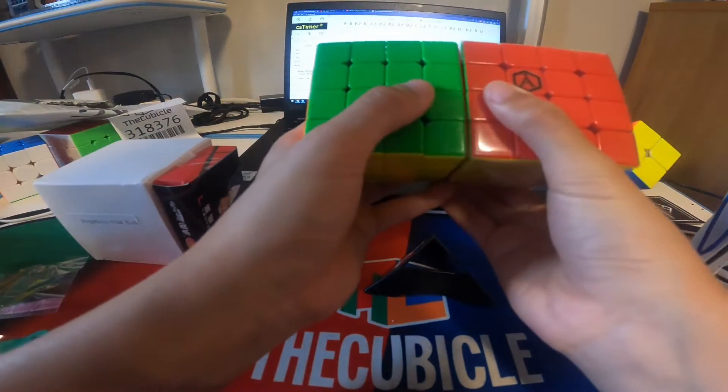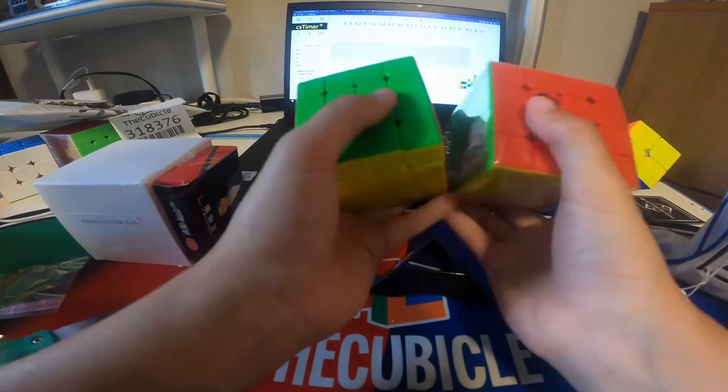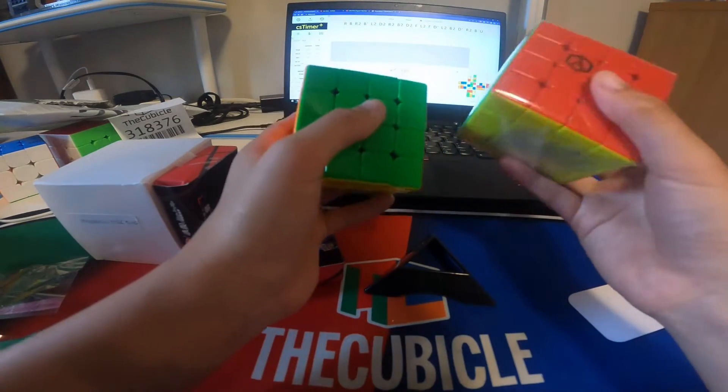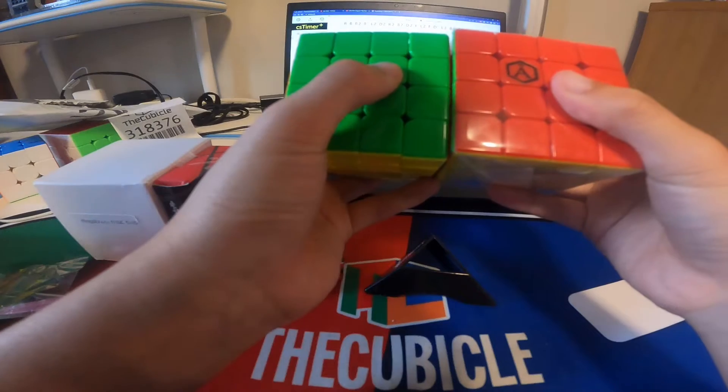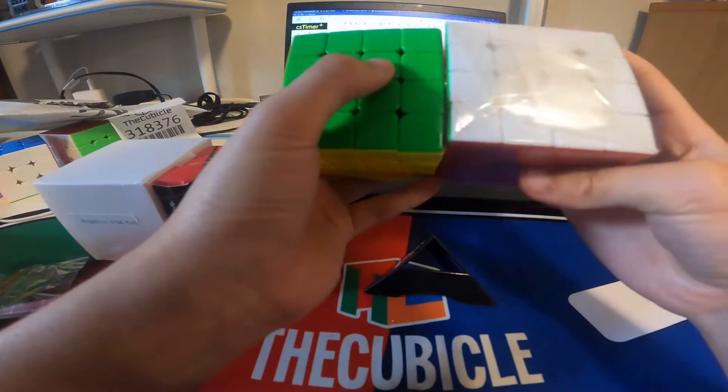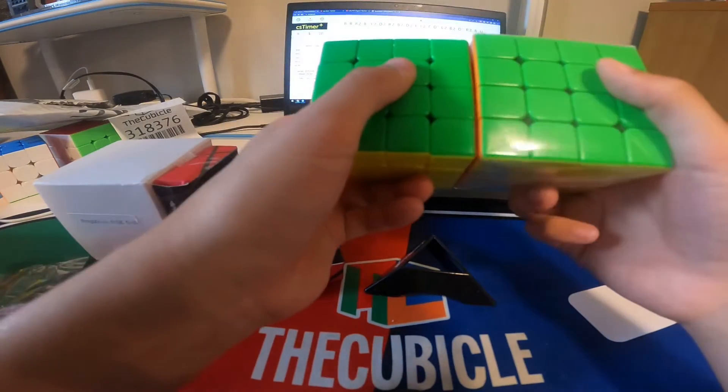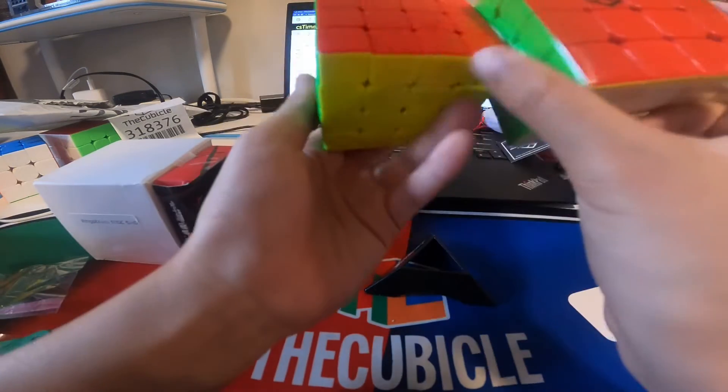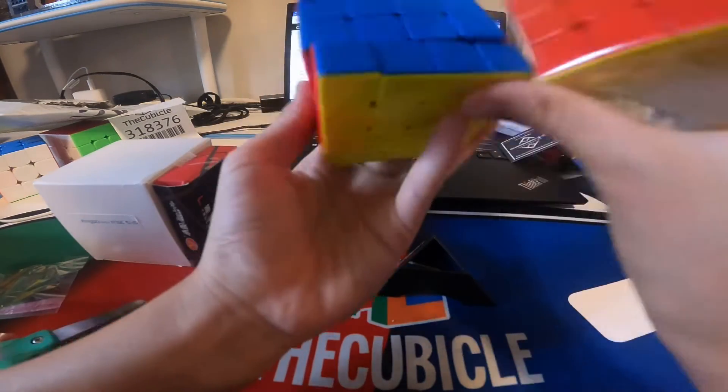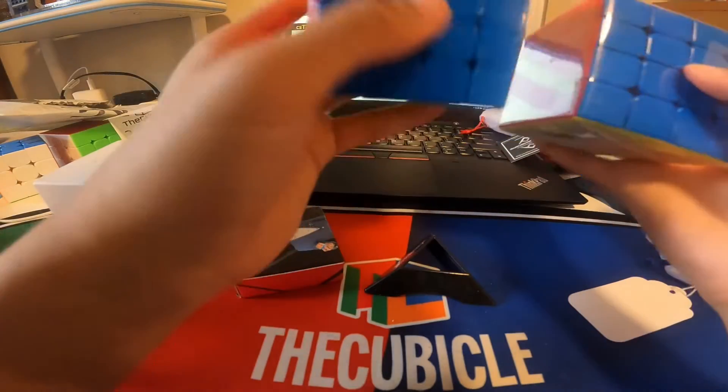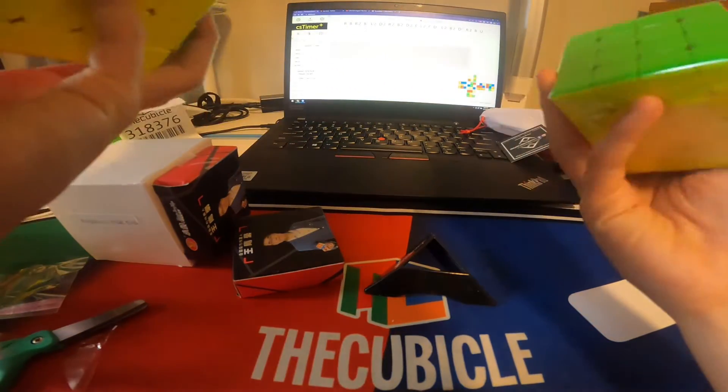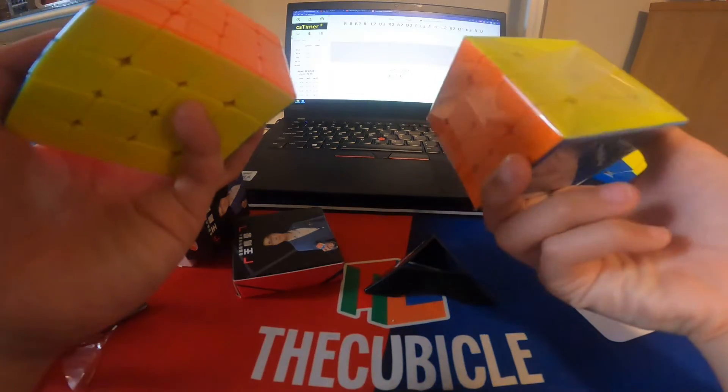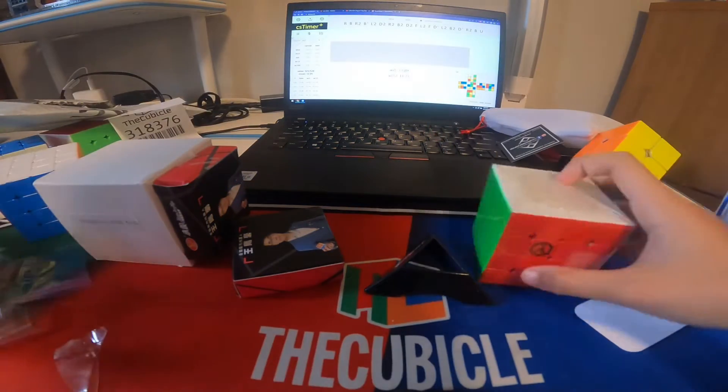So for size, this is a bit bigger than the Aosu. And yeah, the color shades, I'd say that Aosu's are a bit darker. And these are a bit lighter, which I prefer.